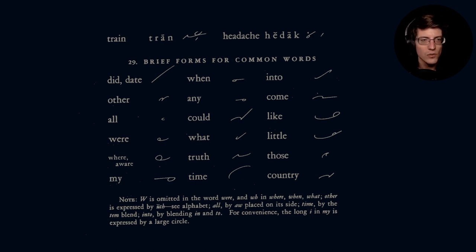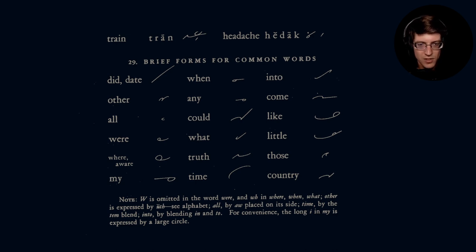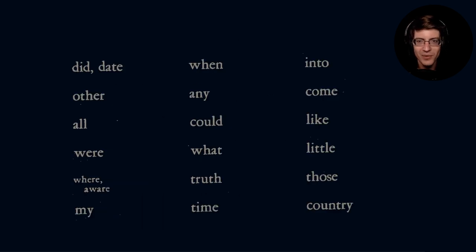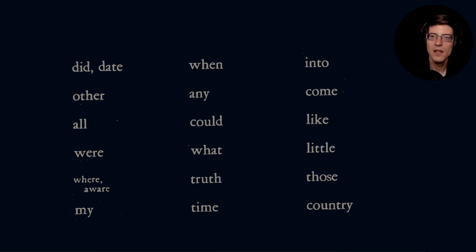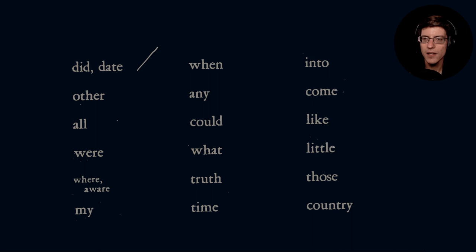Let's go ahead and start writing these out. Make sure I've got the correct version here — we need section 29. So hopefully you can see this writing. Let's get started. 'Did' and 'date' — that is the DT blend. 'Other' is written with the A stroke.